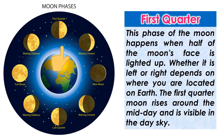First quarter. This phase of the moon happens when half of the moon's face is lighted up. Whether it is left or right depends on where you are located on Earth. The first quarter moon rises around midday and is visible in the day sky.